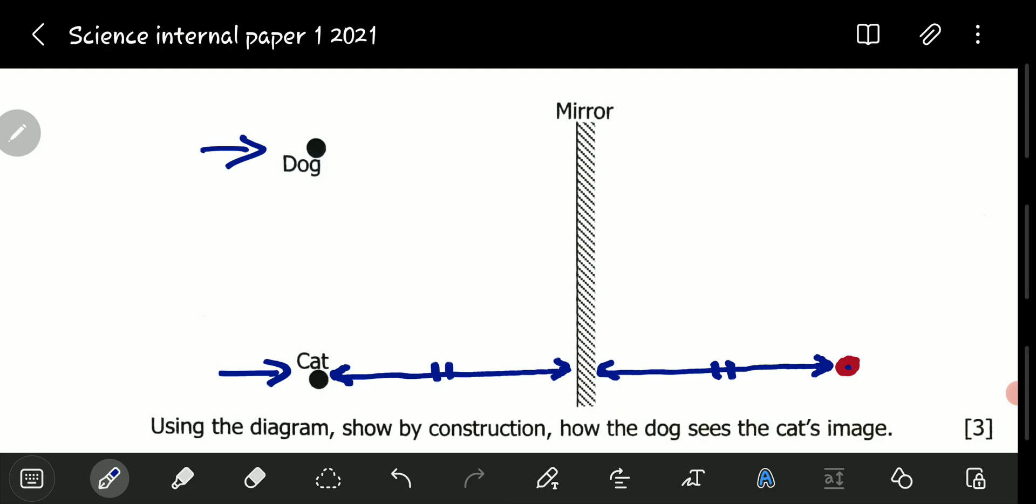After you have done that, what will follow is this. You can only find the image by using two rays of light, never one. And the law of reflection should always hold. The angle of incidence should be always equal to the angle of reflection. Now the dog is seeing the cat, so we will draw two rays.